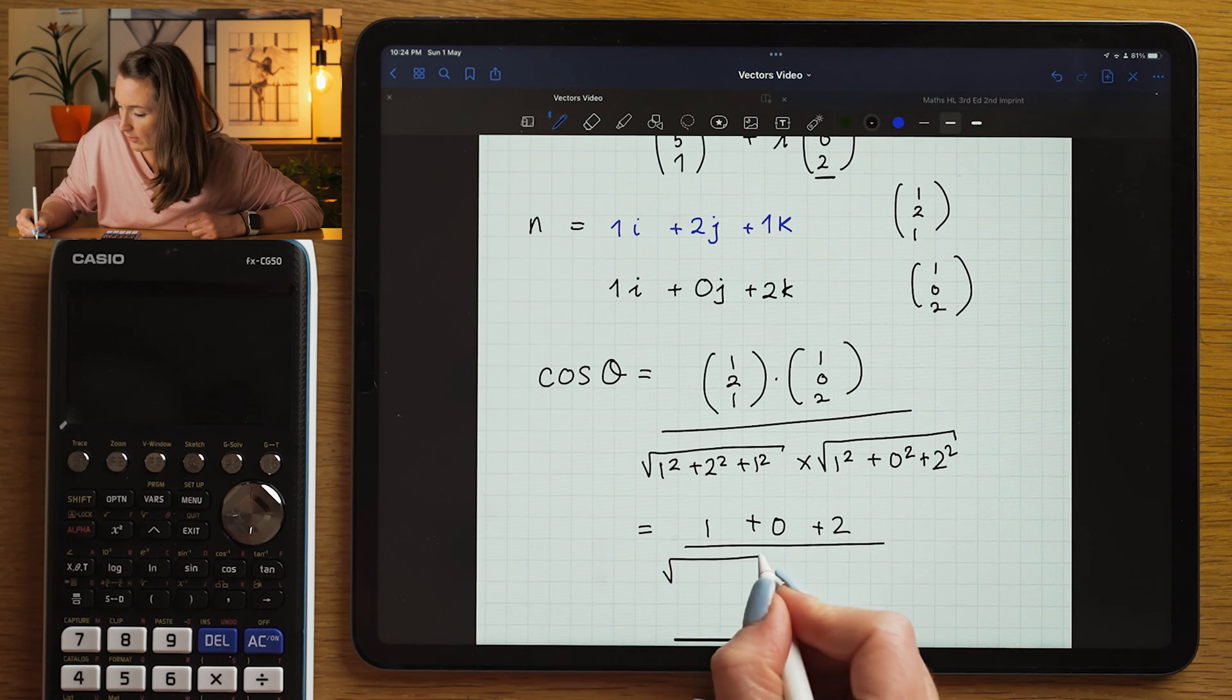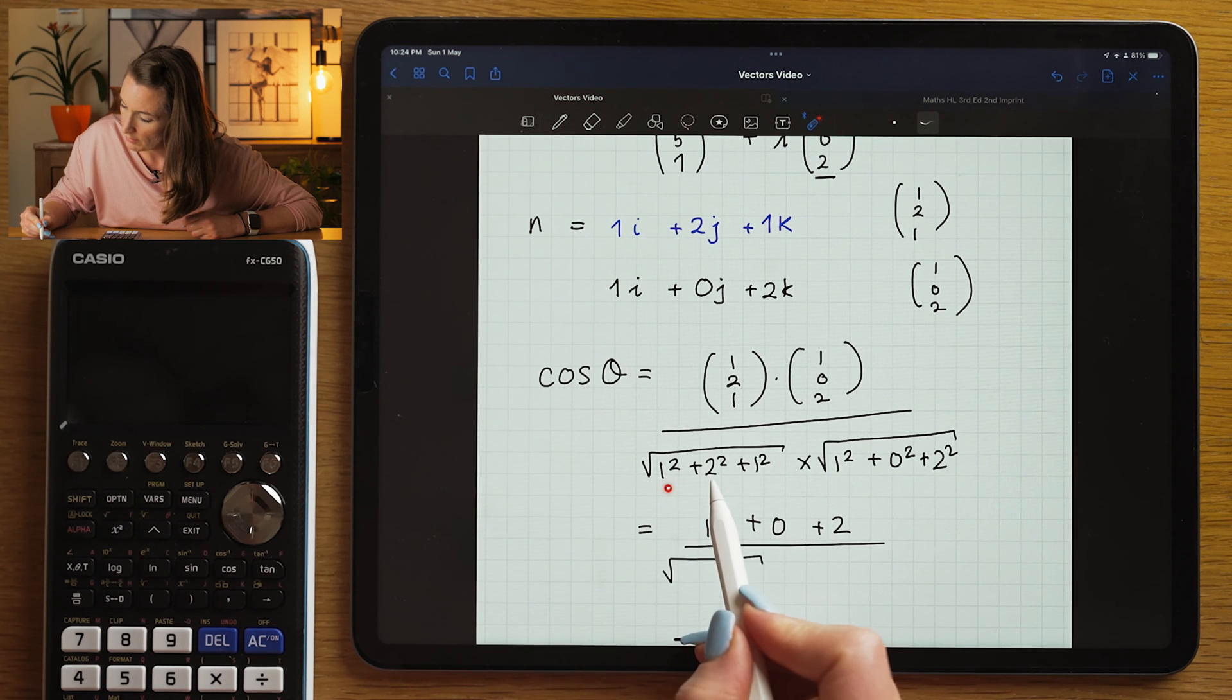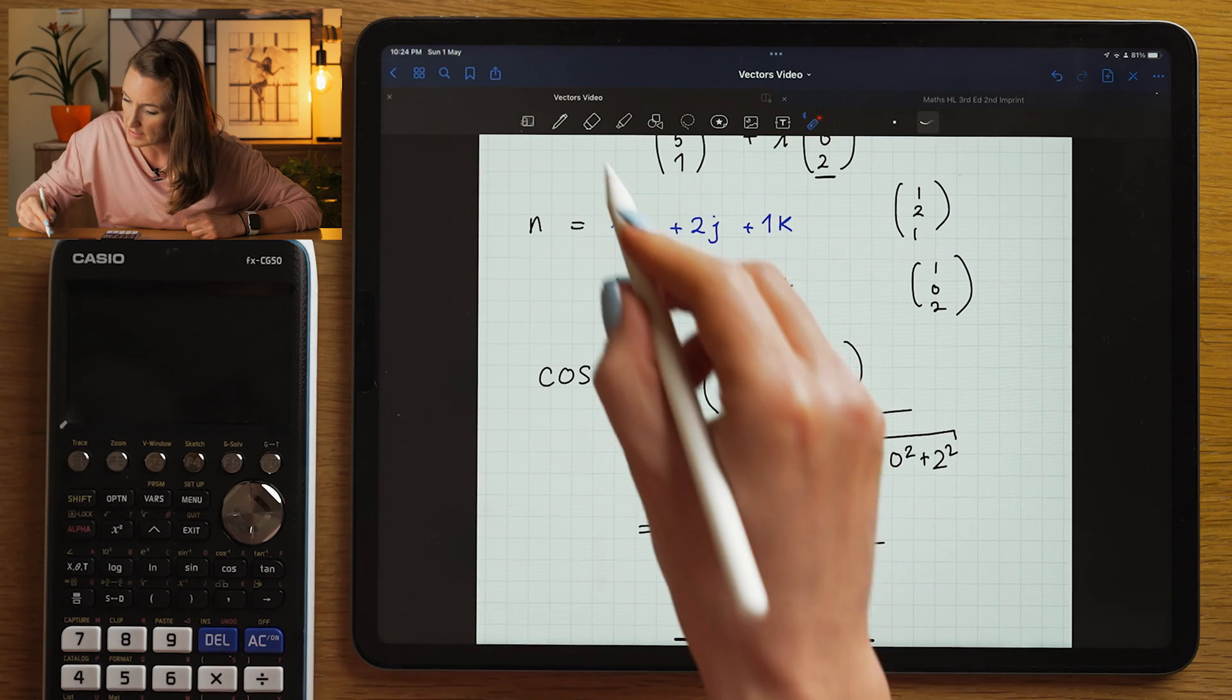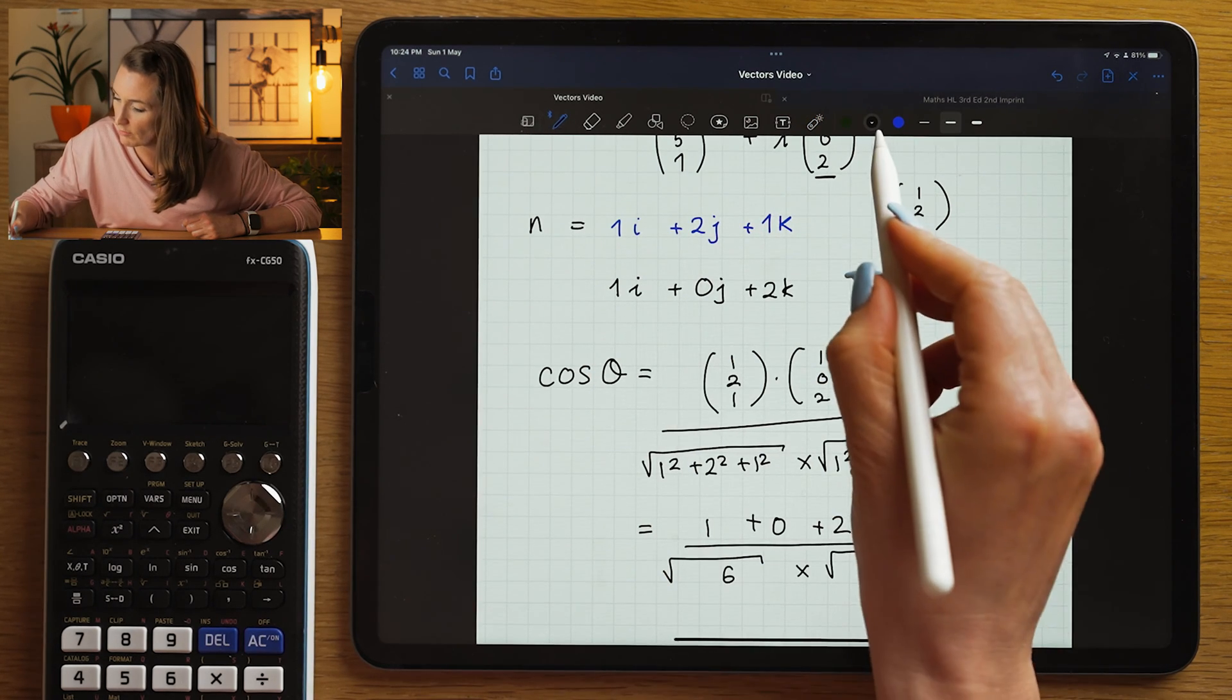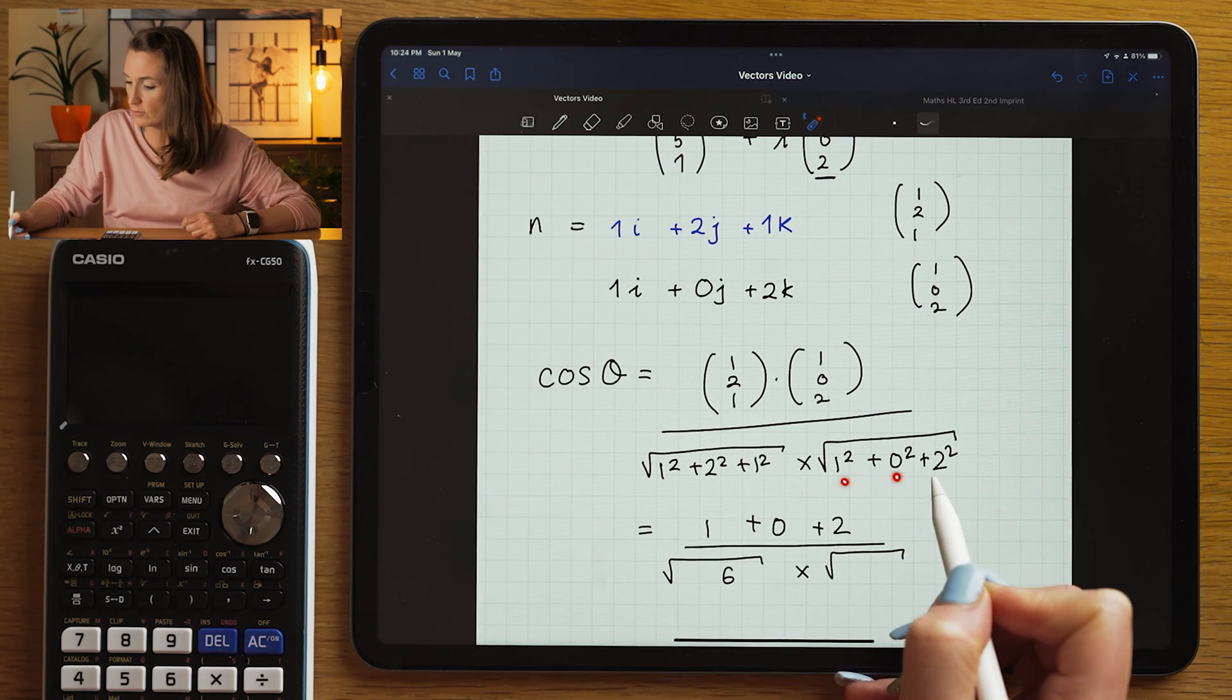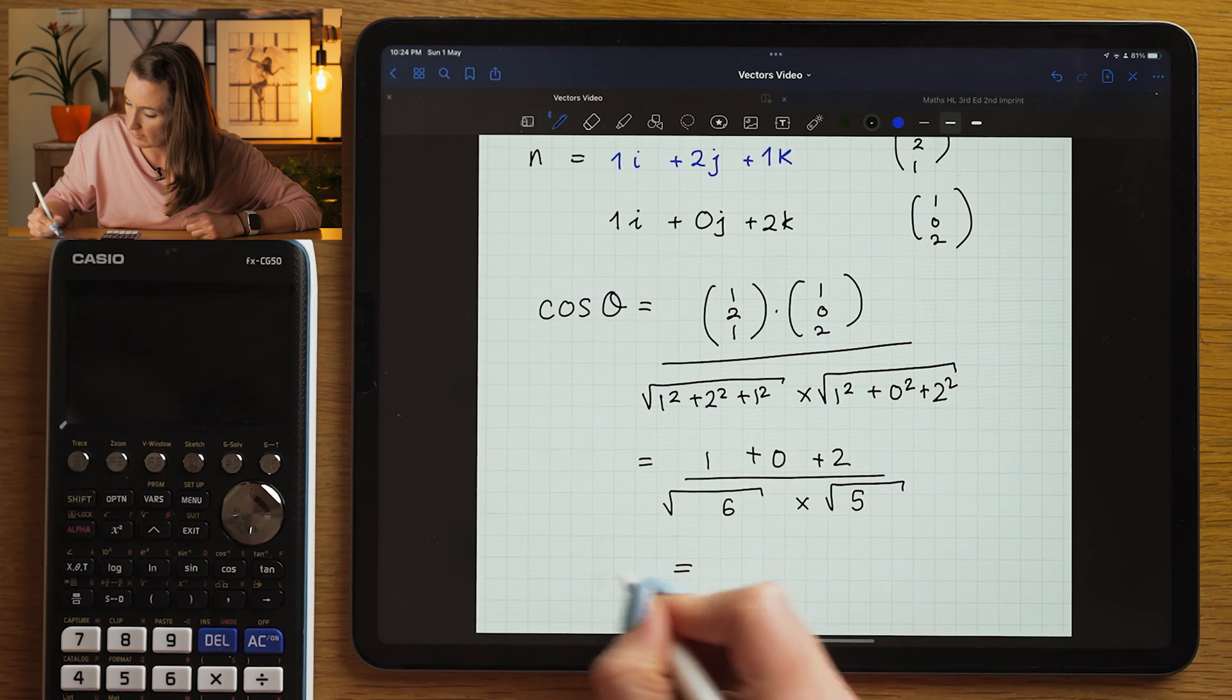We're going to divide that by the magnitude. So this is going to be 1 squared is 1 plus 2 squared is 4, so that would be 5, and another one is 6. So that would be square root 6 times by the square root of 1 squared is 1, 0 squared is 0, 2 squared is 4. So this would be square root 5.